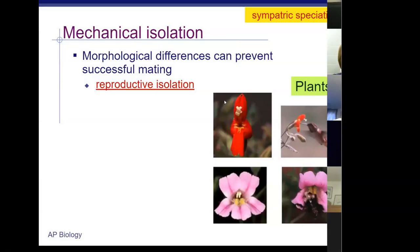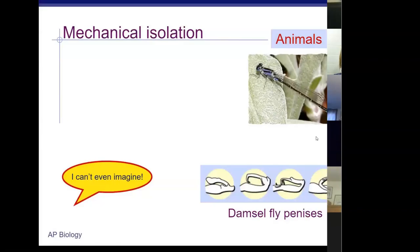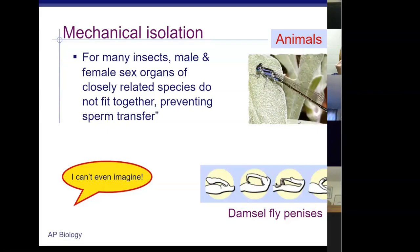Mechanical isolation involves differences in morphology — shape — that prevent successful mating. Plants, for example, must have the right shapes to fit the right pollinators, creating a co-evolution between birds, butterflies, and flowers. Different hummingbirds fit different flowers, attracting different pollinators. Monkey flowers have different shapes and cannot cross-pollinate. Mechanical isolation also applies to the mechanics of sex organs themselves — different damselfly penises have different shapes that only fit certain openings.